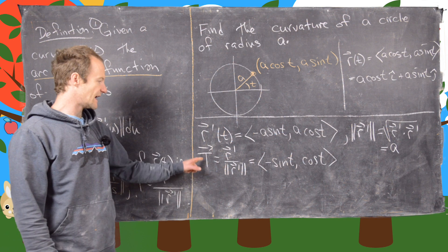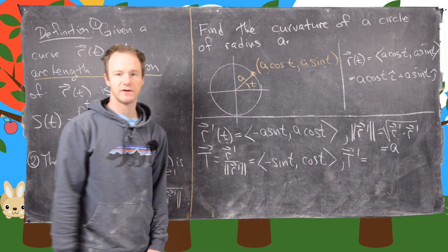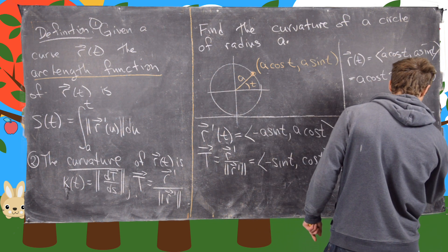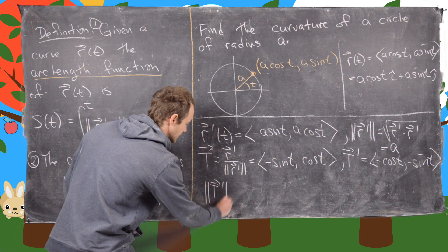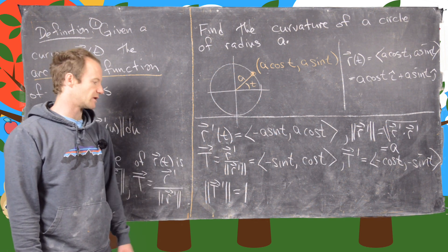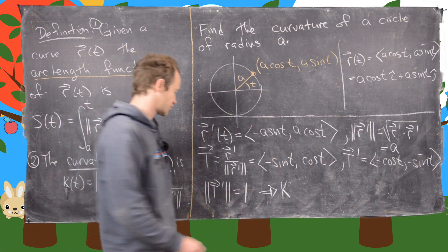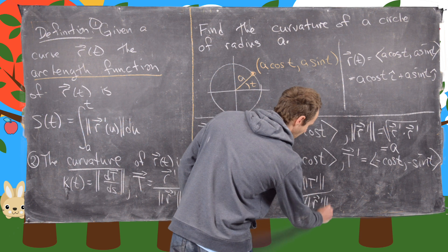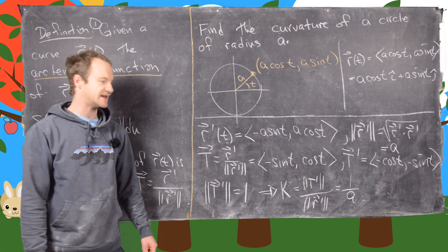Next we find T prime by differentiating sine and cosine, giving T prime equals (−cos t, −sin t). Taking the magnitude of T prime, we get the square root of cosine squared plus sine squared, which equals 1. Finally, kappa equals the magnitude of T prime divided by the magnitude of r prime, which gives 1 over a. So the curvature of a circle of radius a is 1/a.